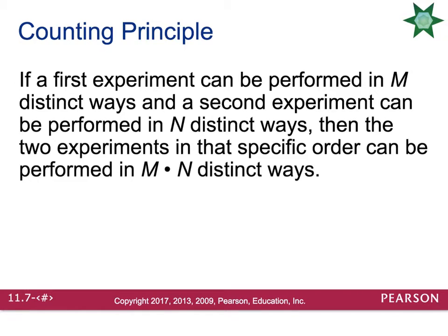First is the counting principle, which you have seen before when we talked about tree diagrams. If a first experiment can be performed in m distinct ways and a second experiment can be performed in n distinct ways, then the two experiments in that specific order can be performed in m times n distinct ways. So essentially just multiply the two together.